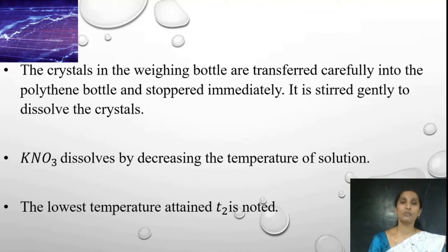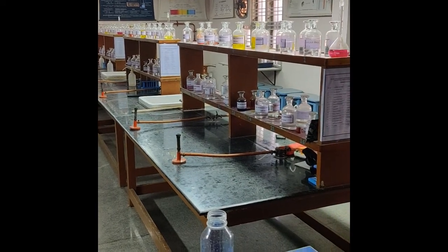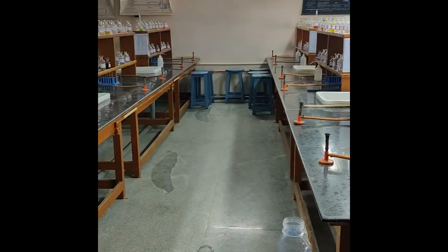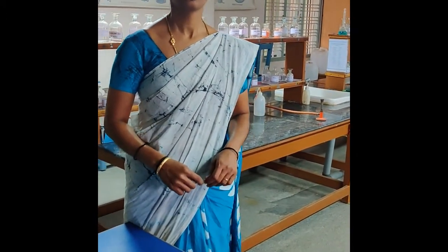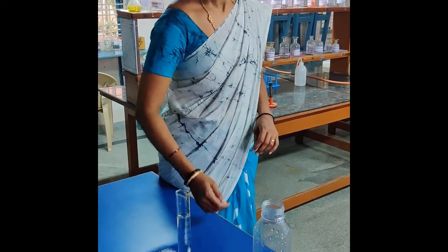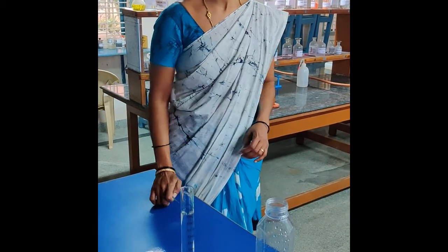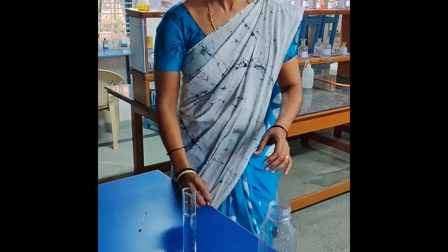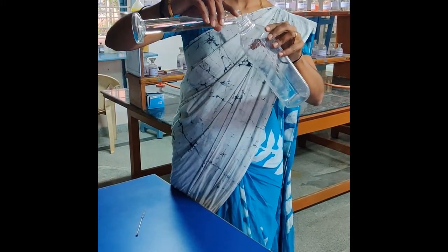Now let us do the practical part and record the values. As already explained in the procedure, I have taken a polythene bottle with a rubber cork fitted with a thermometer, a measuring cylinder with 100 ml of water, and 5 grams of potassium nitrate. First, using a clean measuring cylinder, I will be adding 100 ml of water to the polythene bottle.